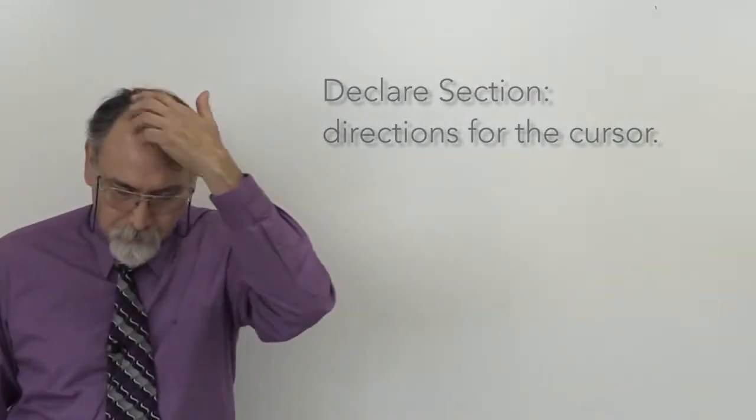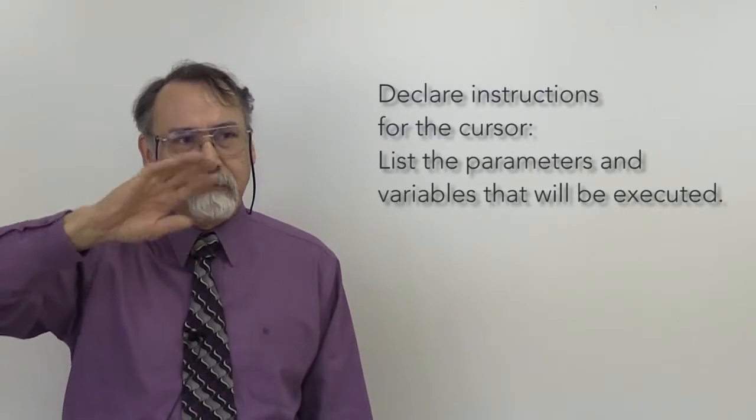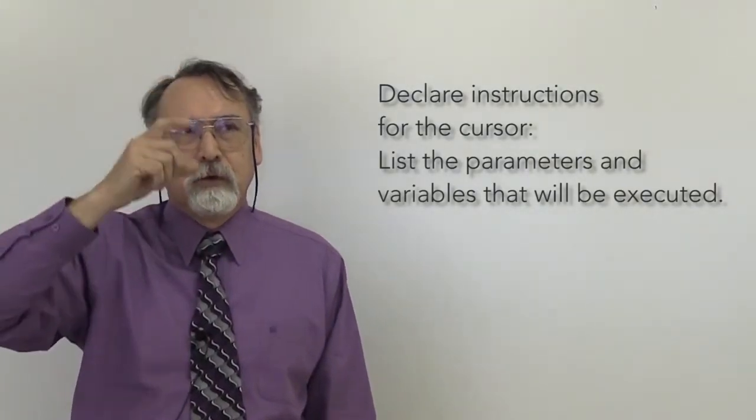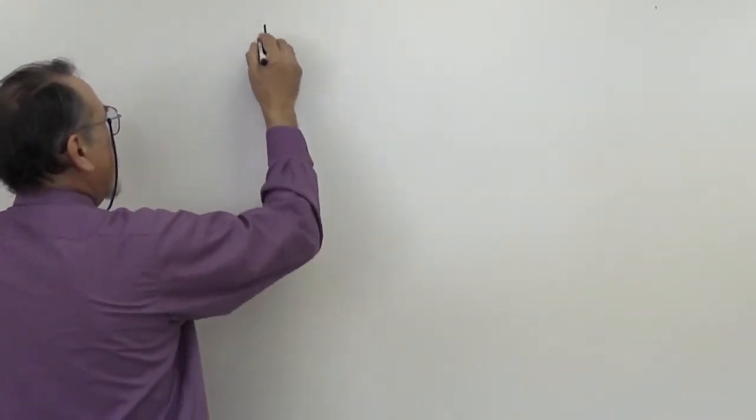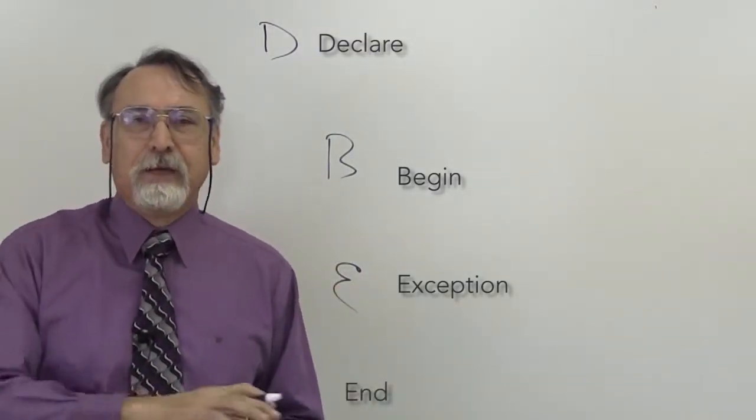There is a formal process that you have to build. We talked about the block earlier where you have the block, the begin, the exception, and the end. The cursor is part of that process. Within the declare section of your block, the declare is where you list the parameters, the variables, everything you're going to use in the executable part. So the cursor — that process that picks up and delivers — is encoded in the declare. Remember: you have the declare, the begin, the exception, and the end. This is the classic block structure that supports all of PL/SQL.